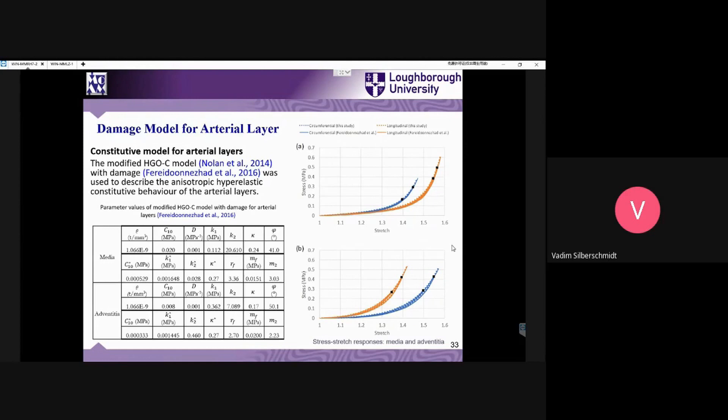These are the respective parameters for the model shown before, and there is a comparison of the current model with the experimental data. You can see a pretty good correlation for two major directions: circumferential and longitudinal.